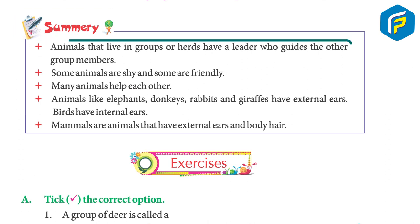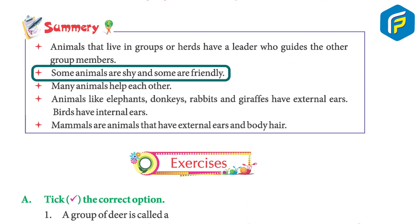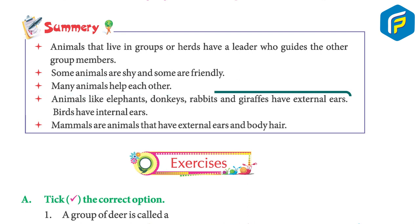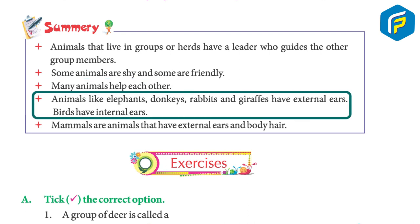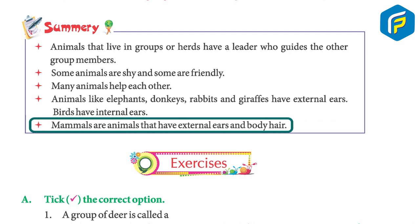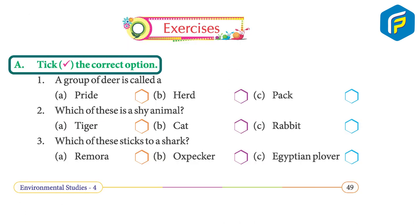Summary: Animals that live in groups or herds have a leader who guides the other group members. Some animals are shy and some are friendly. Many animals help each other. Animals like elephants, donkeys, rabbits, and giraffes have external ears. Birds have internal ears. Mammals are animals that have external ears and body hair.